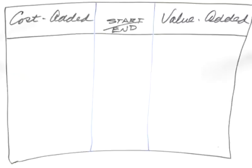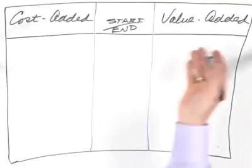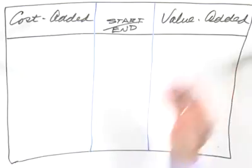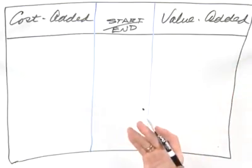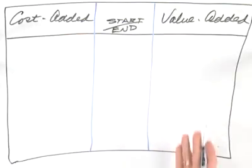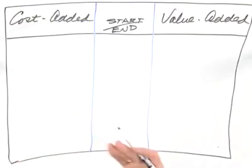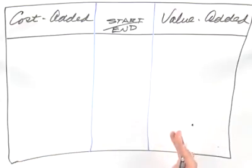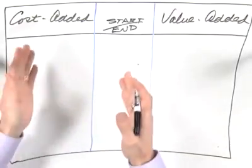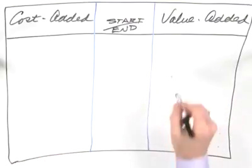The final flow chart that we want to review in this session is what's called the cost added value added flow chart. This is a valuable flow chart that allows you to figure out what steps add value from the customer's perspective and which ones add cost. We're going to combine both the detailed flow chart with this notion of cost and value added.